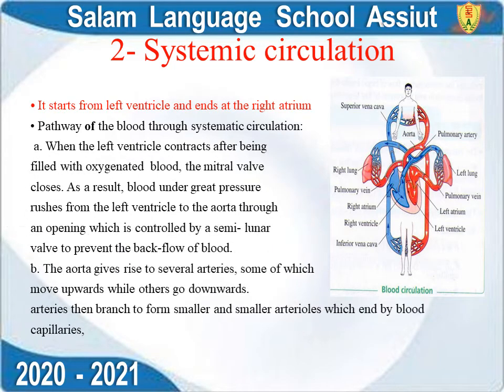The left ventricle then contracts. Blood moves from the left ventricle into the aorta. Some branches of the aorta move upward while others move downward. These arteries extend to spaces between the cells.